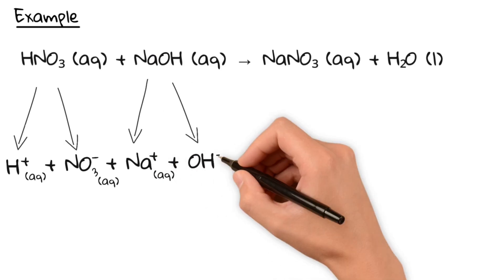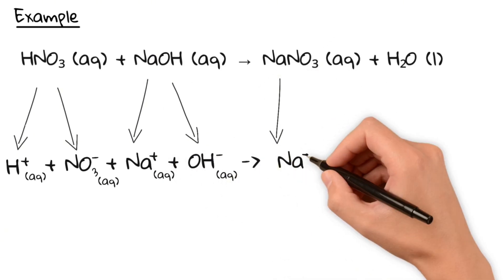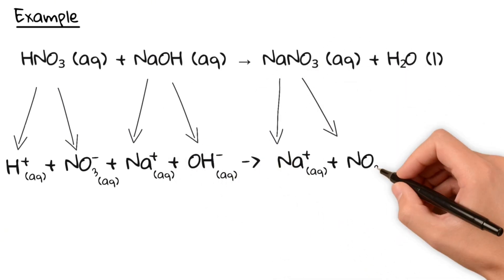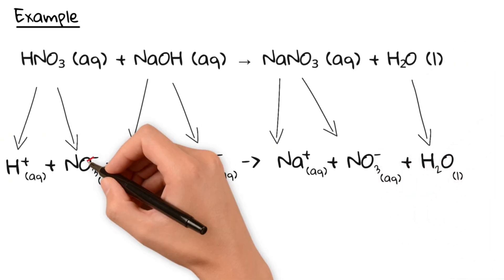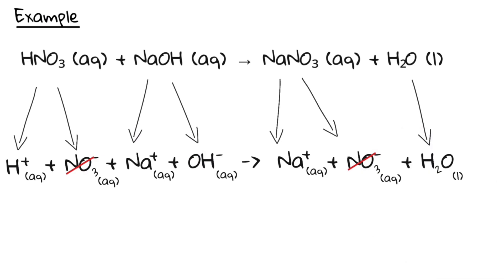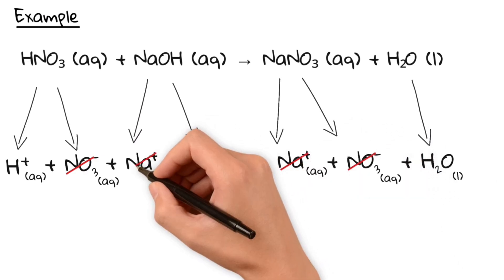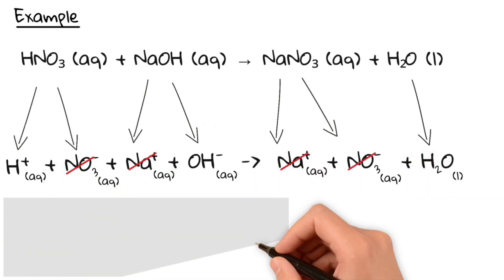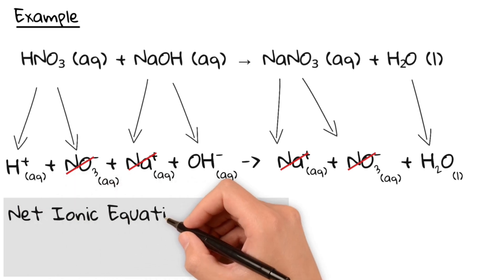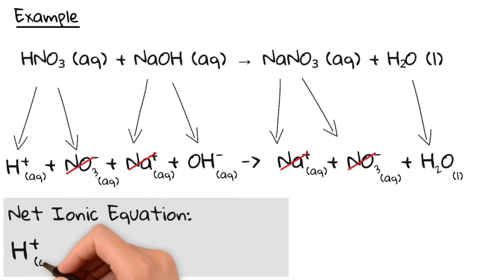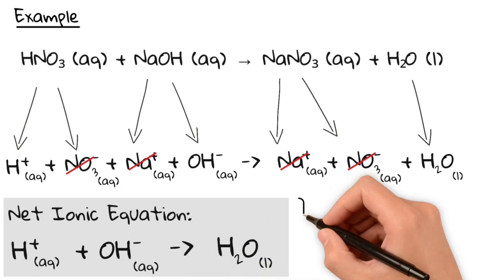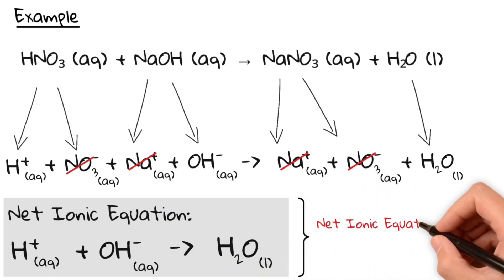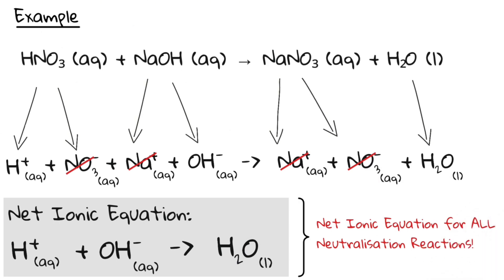This is a neutralization reaction between nitric acid and sodium hydroxide. Both are strong electrolytes, so they fully dissociate in water. First, let's write the full ionic equation. Now, we cancel out the spectator ions. Those are the ones that appear on both sides. As you can see, nitrate and sodium don't do anything, so they can go. Therefore, the net ionic equation is a proton and hydroxide reacts to water. This will be the net ionic equation for any neutralization.